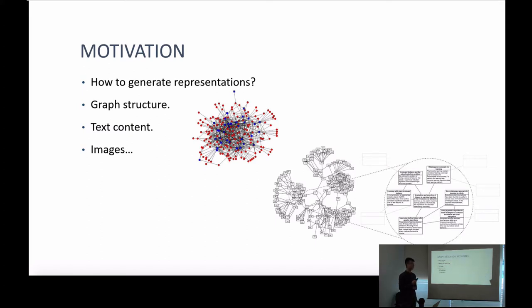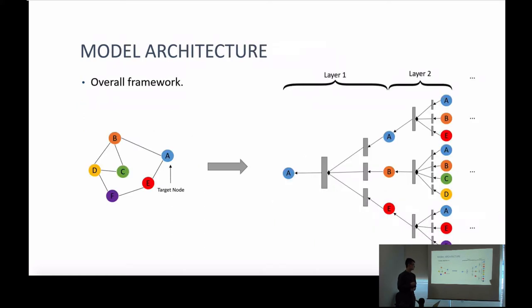Now I turn to the model architecture. Suppose we have a given graph and we want to learn the representation for node A. We put the target node A into the model. A has neighbors B and E, and in this paper we also regard A as a neighbor of itself, so A has three neighbors: A, B, and E. Similarly, B has four neighbors: A, B, C, D; and E has neighbors A, E, F. This part is layer one and this part is layer two. We can expand the model to multiple layers — the number of layers is a hyperparameter depending on the dataset.